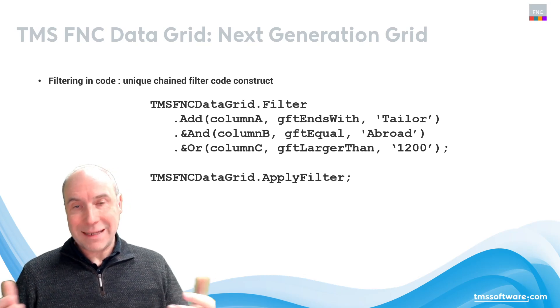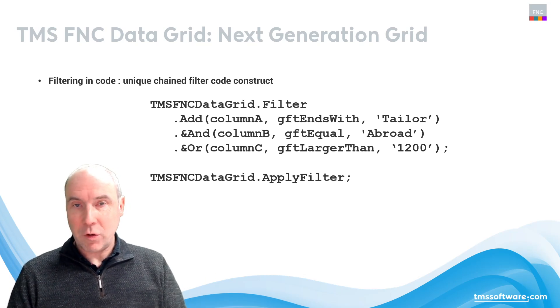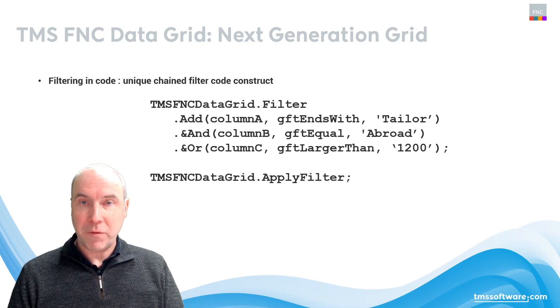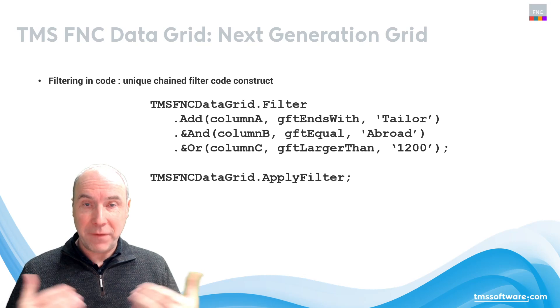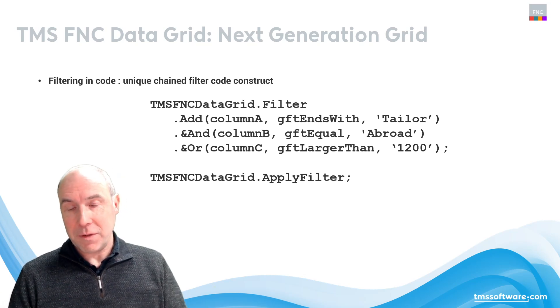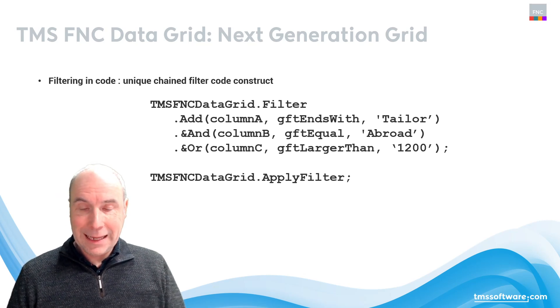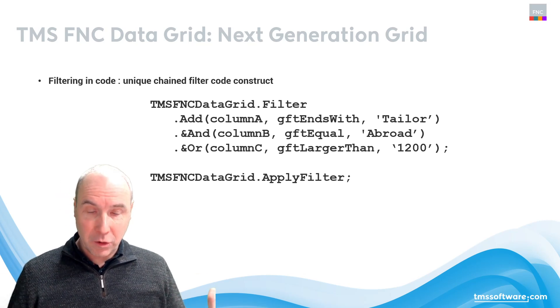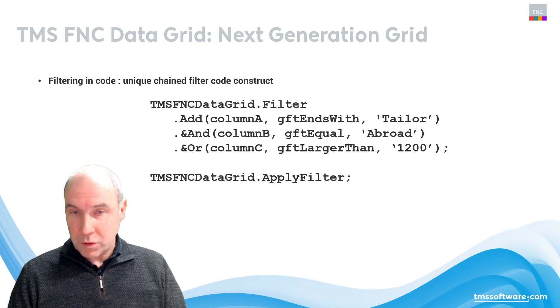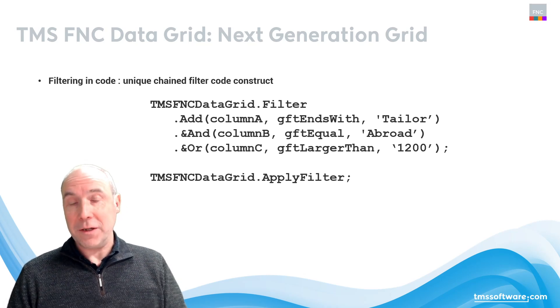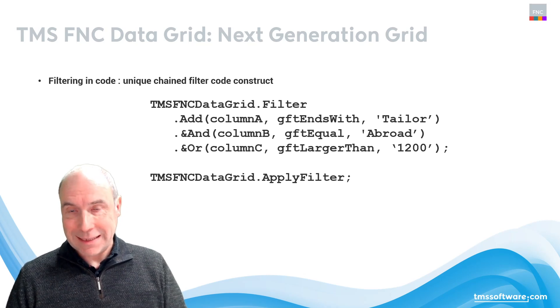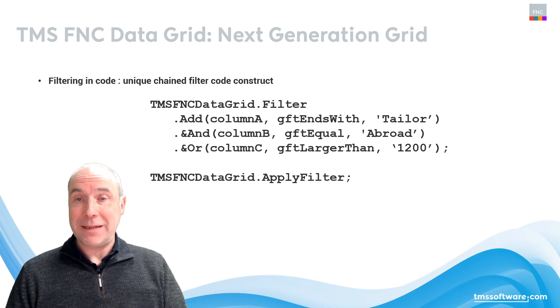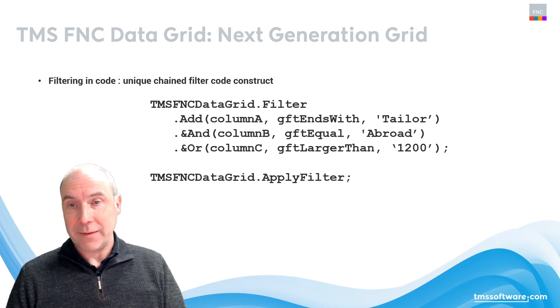When the conditions with these logical operators have been added to the filter collection, the filter is activated by calling the datagrid.applyfilter method. But let's have a look at the demo prepared for this video directly from the IDE, and walk through the filtering capabilities in the FNC data grid.